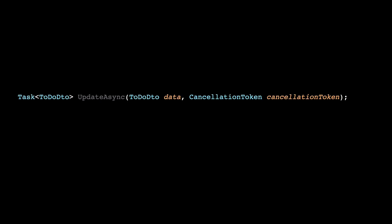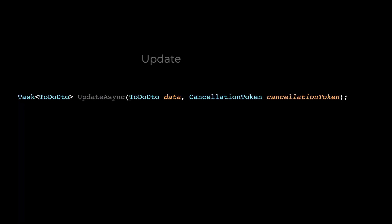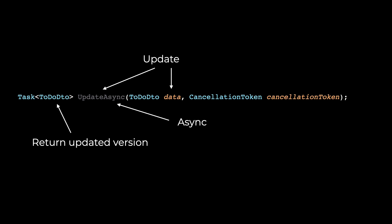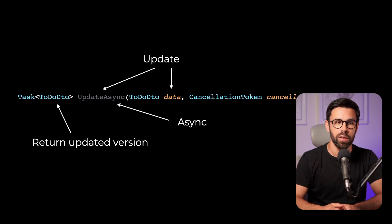Let's set the scene. You are working on a new project and you are given an interface to work with. Looking at the signature, the only things you can infer are that this method will be responsible for updating to-do items, and that there will be a response returning the data, likely an updated version. It should also be an asynchronous method. But in essence, the only thing I can figure out is that this method will update a to-do — I can't infer anything else.